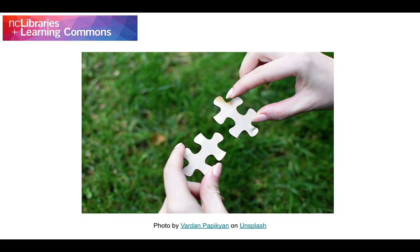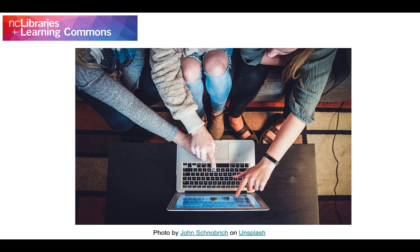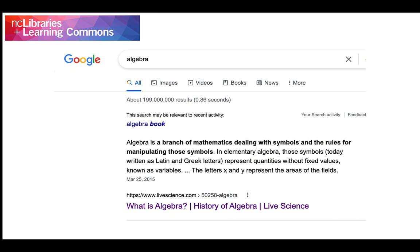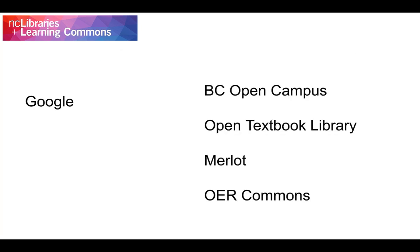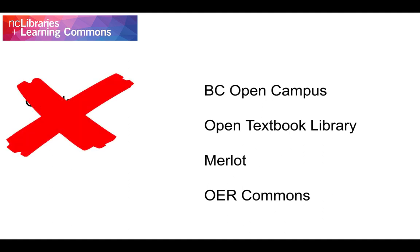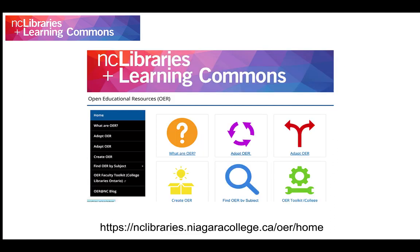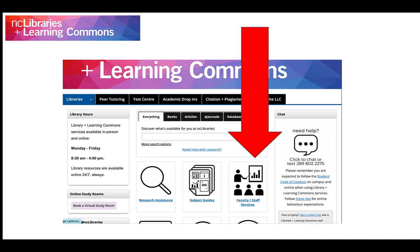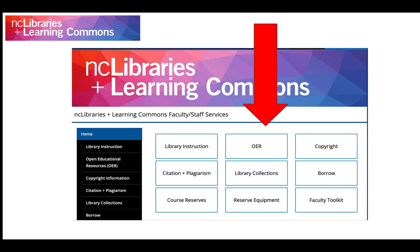Now that you can identify if a resource is in the public domain or if it has a Creative Commons license, it is time to learn where to find these resources. Most, but not all, OER resources — especially resources with a Creative Commons license — exist on the internet. Rather than using a general search engine to locate OER, you are better off looking in OER repositories that exist to make finding OER easier. Detailed information about these repositories can be found on NC Libraries' OER guide. To find this guide from the NC Libraries homepage, just click on Faculty/Staff Services and then OER.